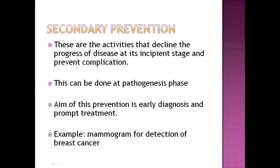Next is secondary prevention. Secondary prevention refers to activities that can decline the progress of disease at its incipient stages and prevent complications. Secondary prevention is done at the pathogenesis phase, where symptoms have already started. The aim of secondary prevention is early diagnosis of disease and prompt treatment.